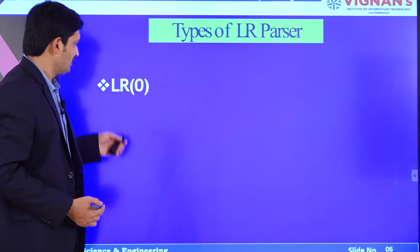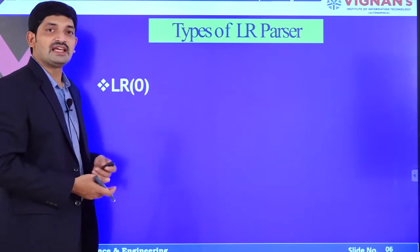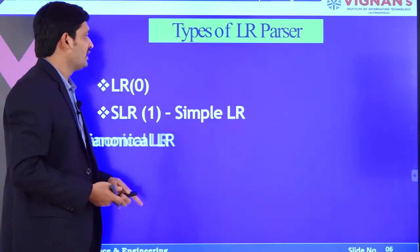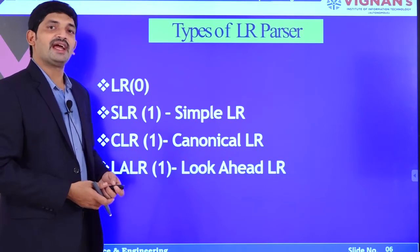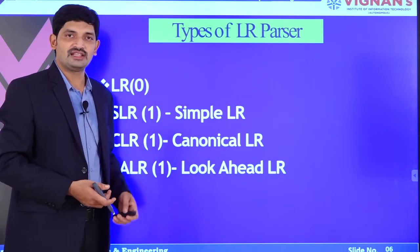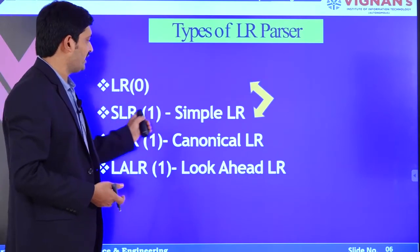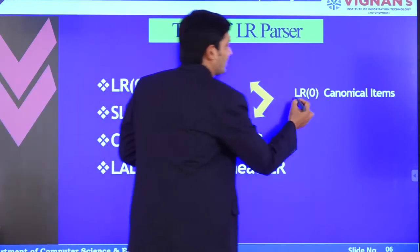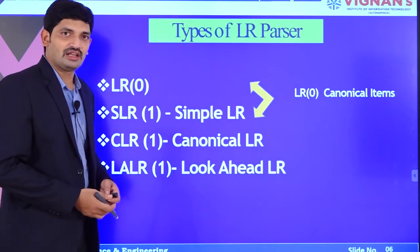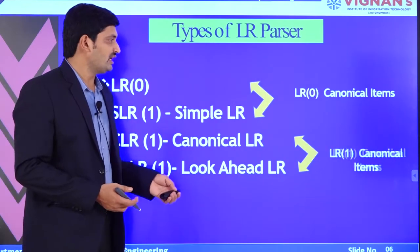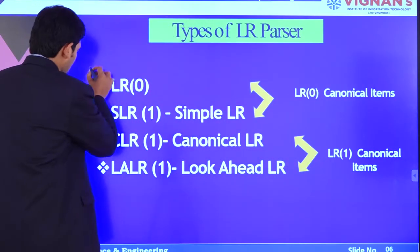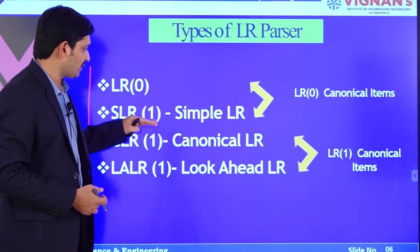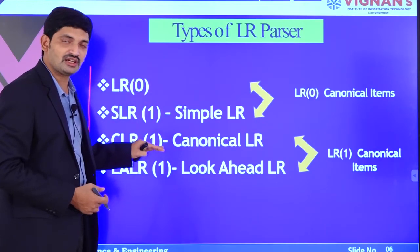There are four types of LR parsers. The first is LR0, the second is SLR1 (simple LR), the third is CLR1 (canonical LR), and the fourth is LALR (look-ahead LR). LR0 and SLR1 require LR0 canonical items to construct, while CLR1 and LALR1 require LR1 canonical items. LR0 is the least powerful, followed by SLR1, then LALR, then CLR1 as the most powerful.